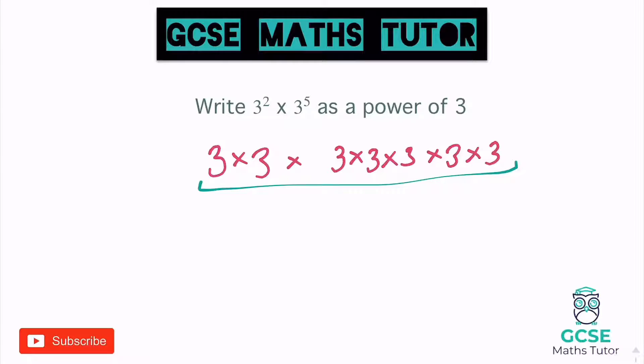And if we count up how many we've got, we've got one, two, three, four, five, six, seven from left to right. So I could just write that as three to the power of seven. And that is our final answer there.